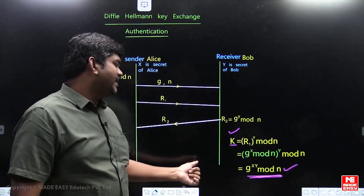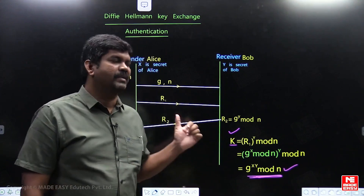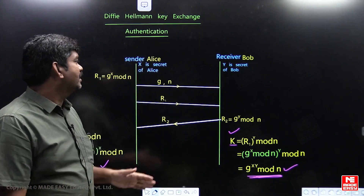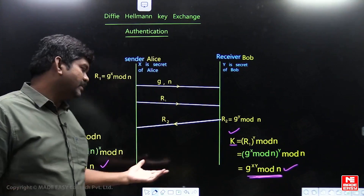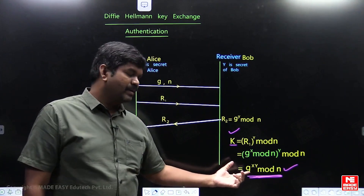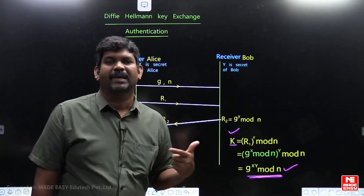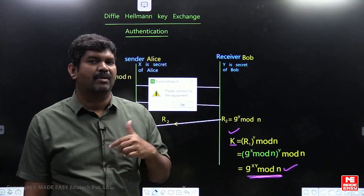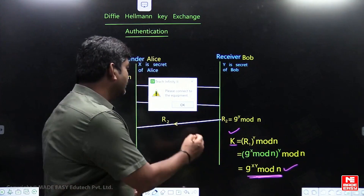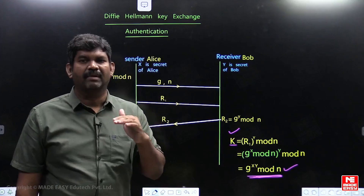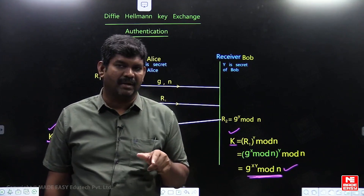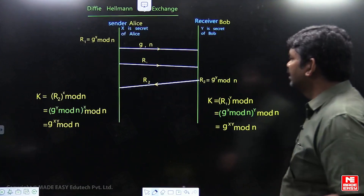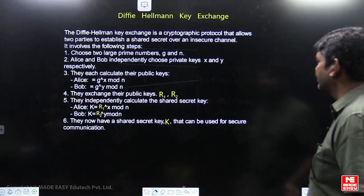However, the common key generated between Alice and Bob can be broken. This key can be compromised by an attack called the man-in-the-middle attack. In this attack, Alice thinks she has a common key with Bob, and Bob thinks he has a common key with Alice — but that is not the reality if this attack has occurred. Such an attack is called the man-in-the-middle attack.